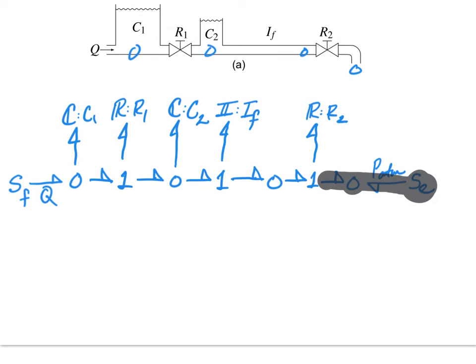That leaves now a simplification. I have a zero junction here that only has two bonds. That zero junction is attached to an R element. It appears right here.